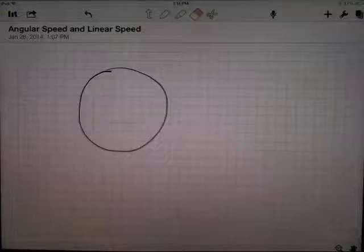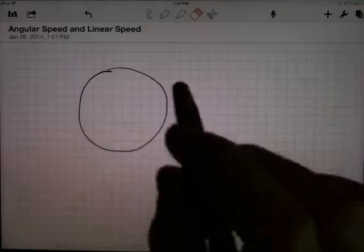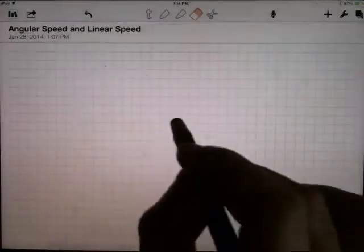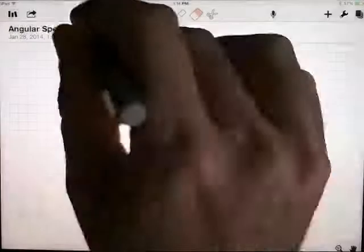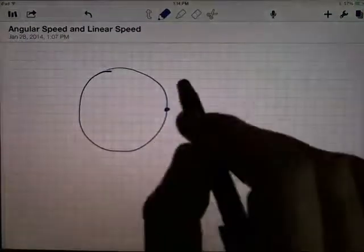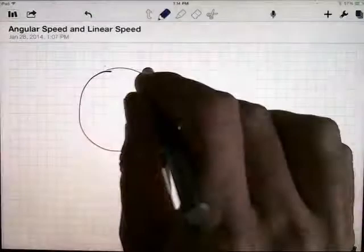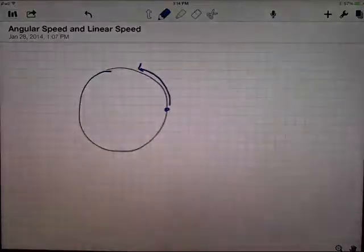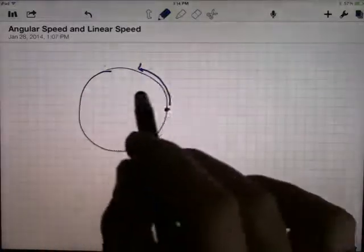I want to talk about the relationship between angular speed and linear speed here today. The idea is you've got an object moving on a circle, so let's grab that point on the circle and it's moving around that circle at a particular speed.